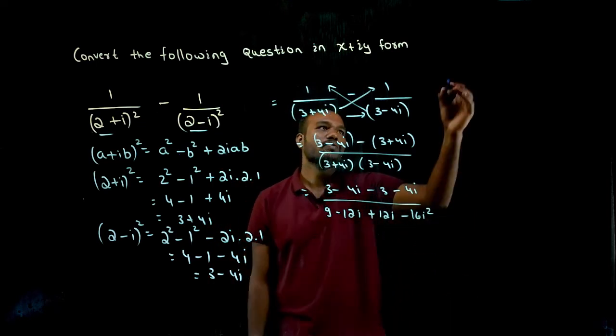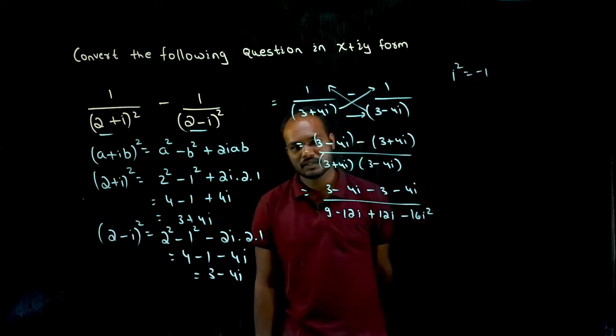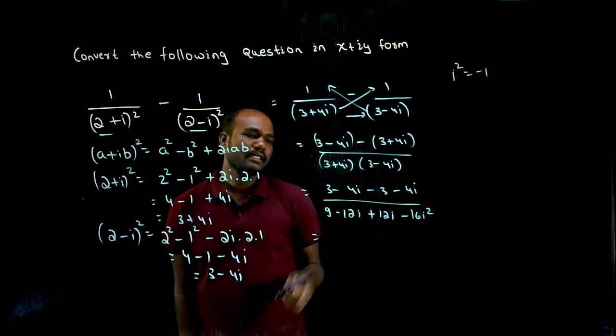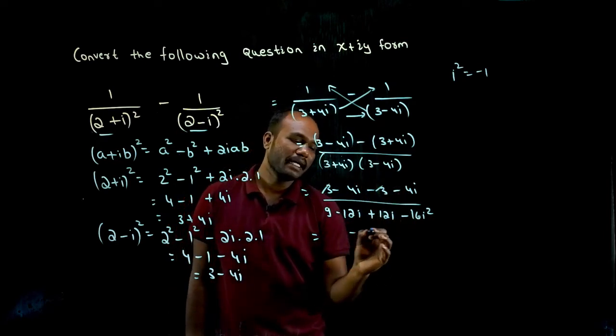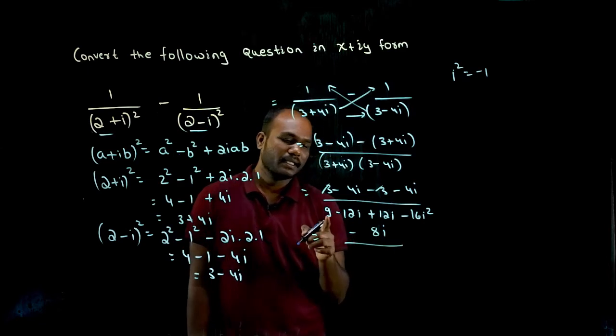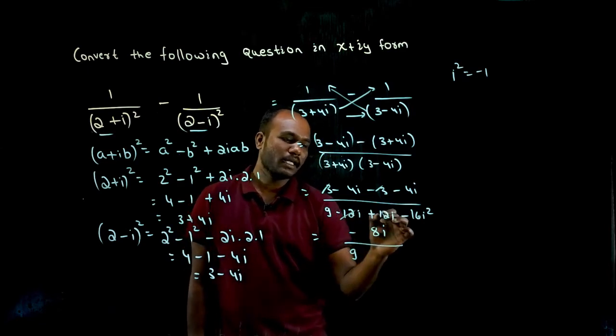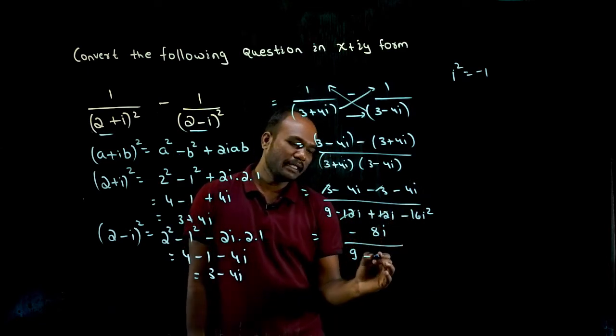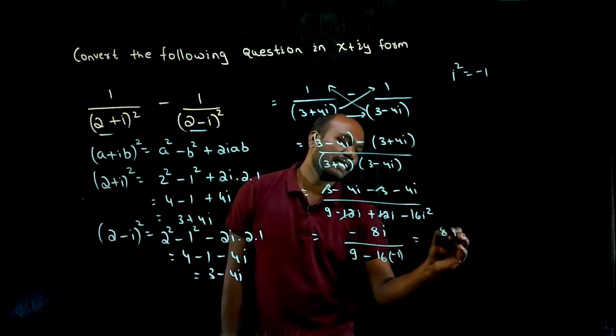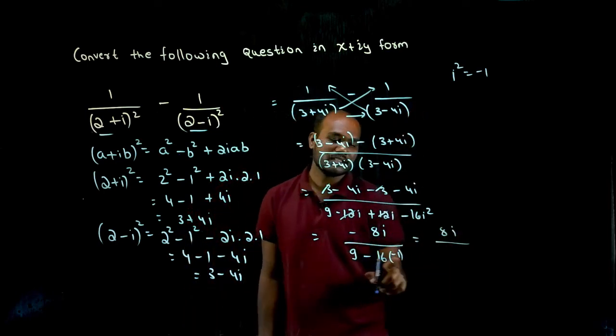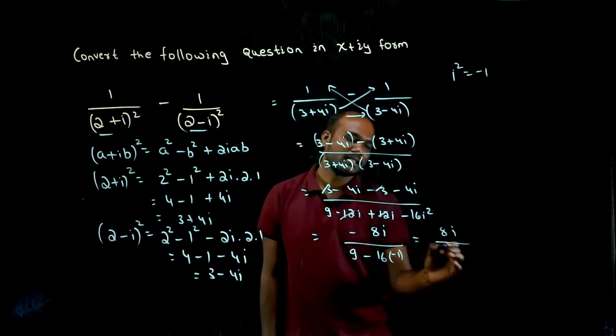What do we know? We know i square value is minus 1. So if I consider that, see here 3 minus 3 get cancelled, minus 4i minus 4i is minus 8i divided by 9. Plus 12i minus 12i get cancelled. Minus 16 times i square value minus 1, so minus 8i divided by 9, minus into minus is plus, so 9 plus 16 is 25.